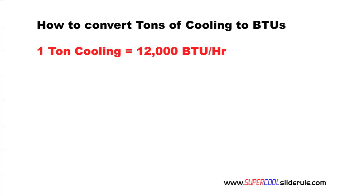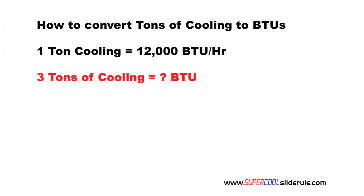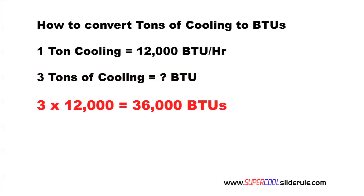In this example, we will convert 3 tons of cooling to BTUs. We simply multiply 3 times 12,000 and our answer is 36,000. So, 3 tons of cooling is equal to 36,000 BTUs of cooling.